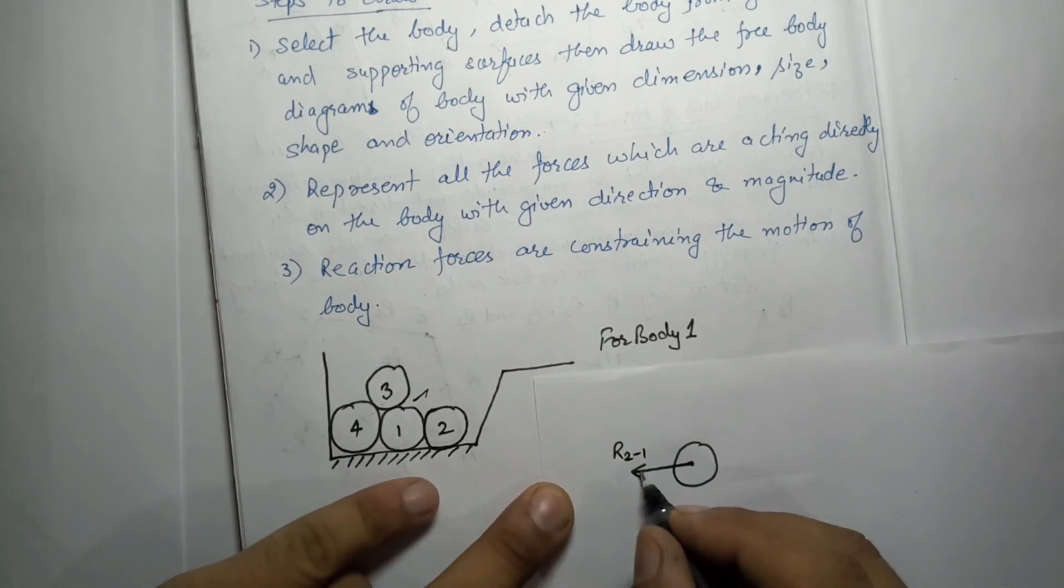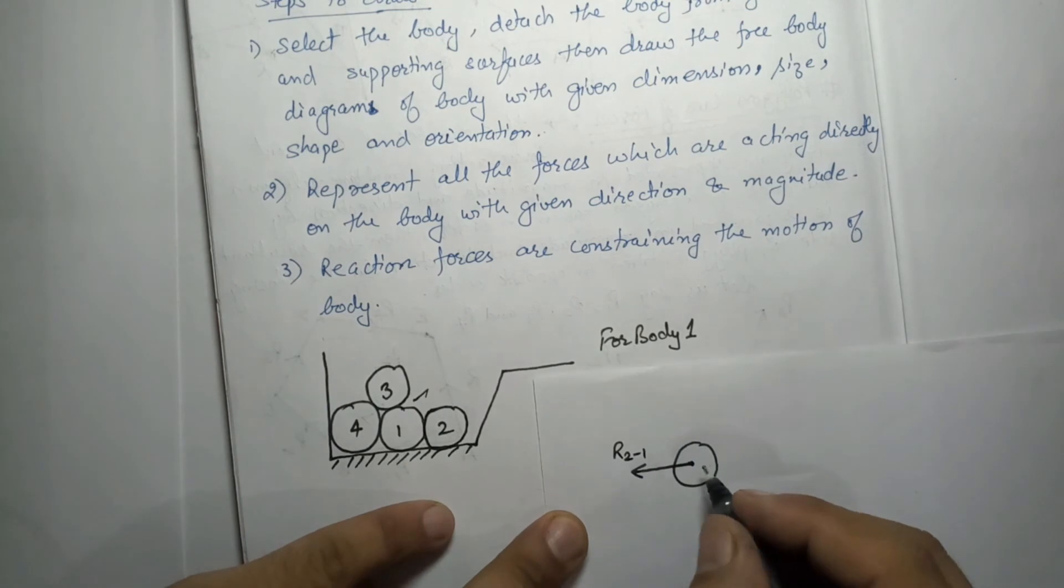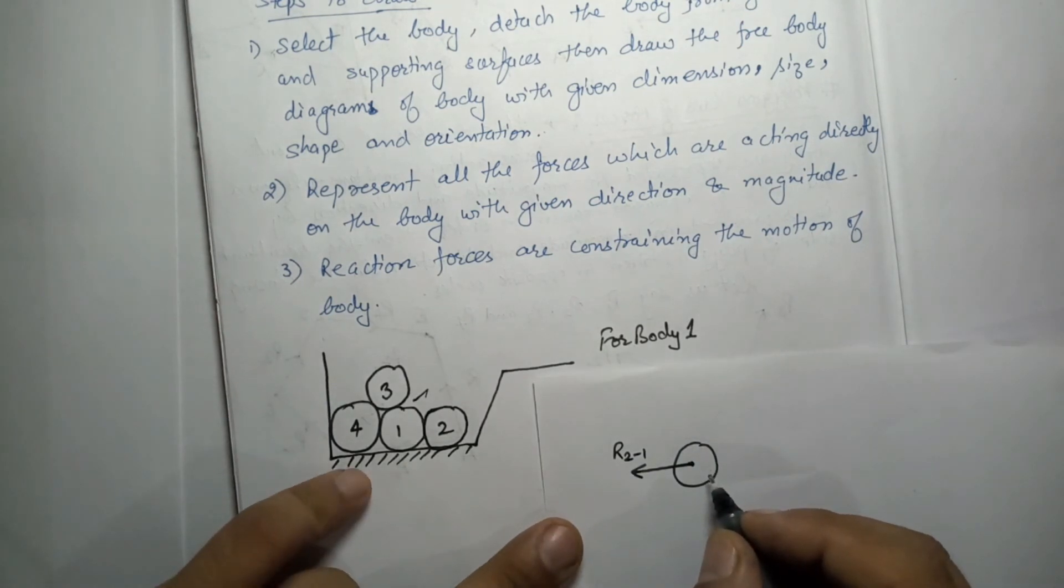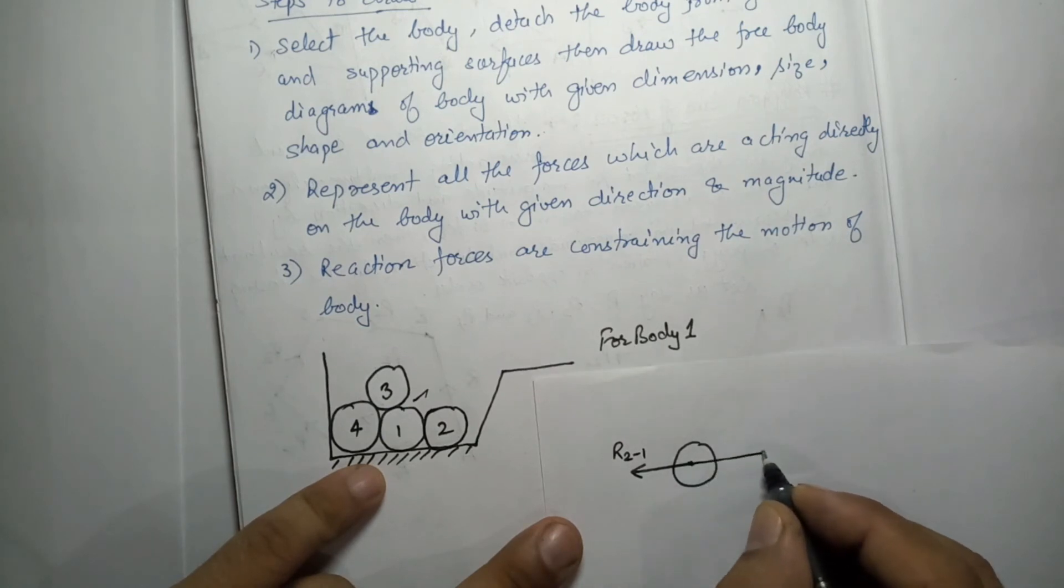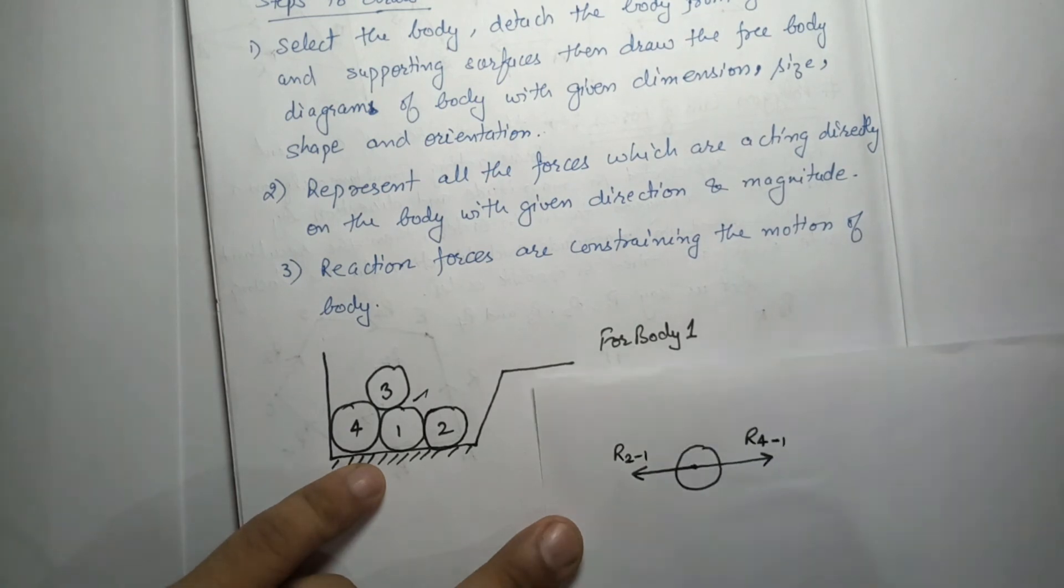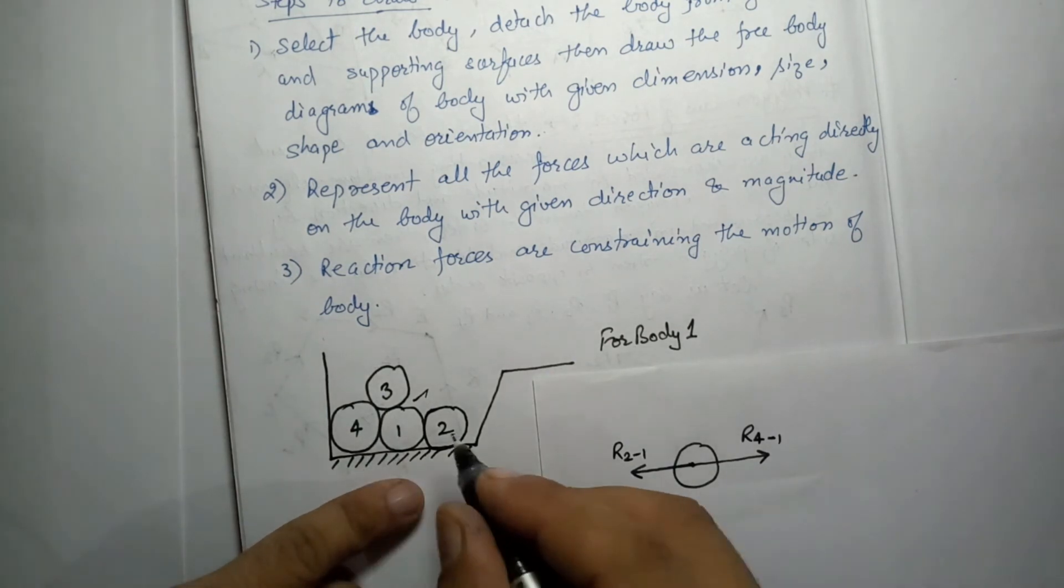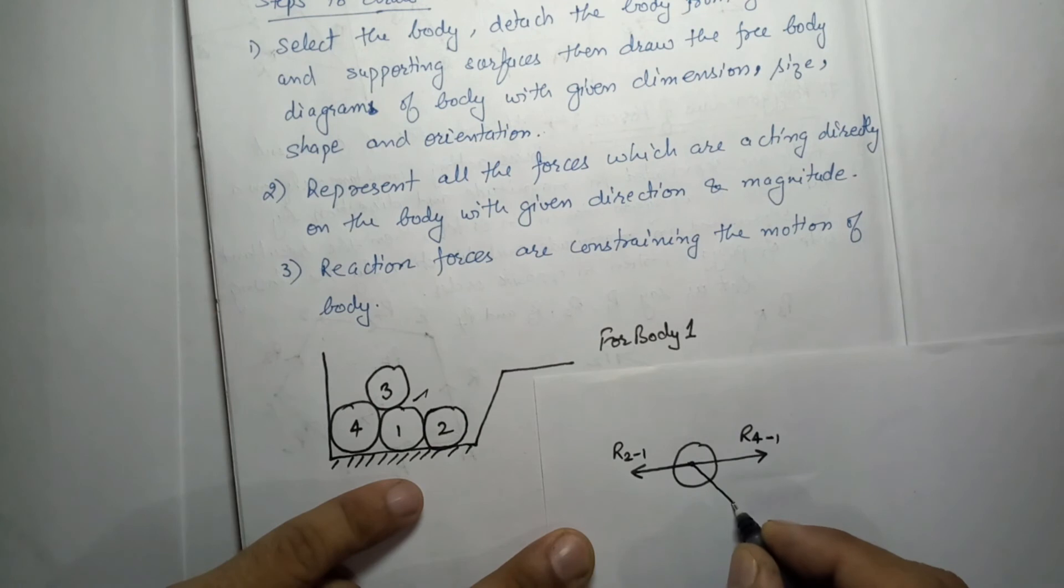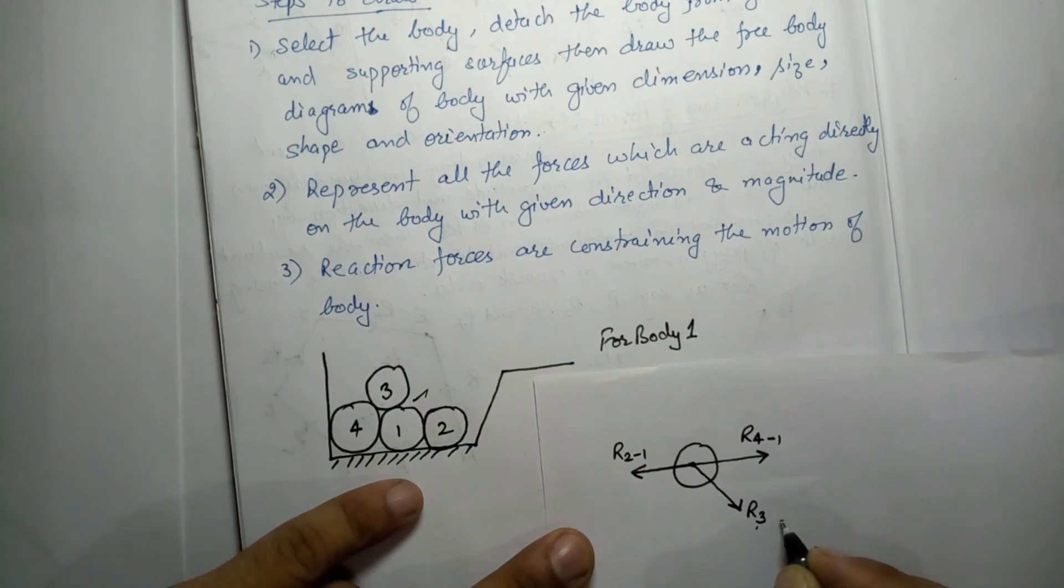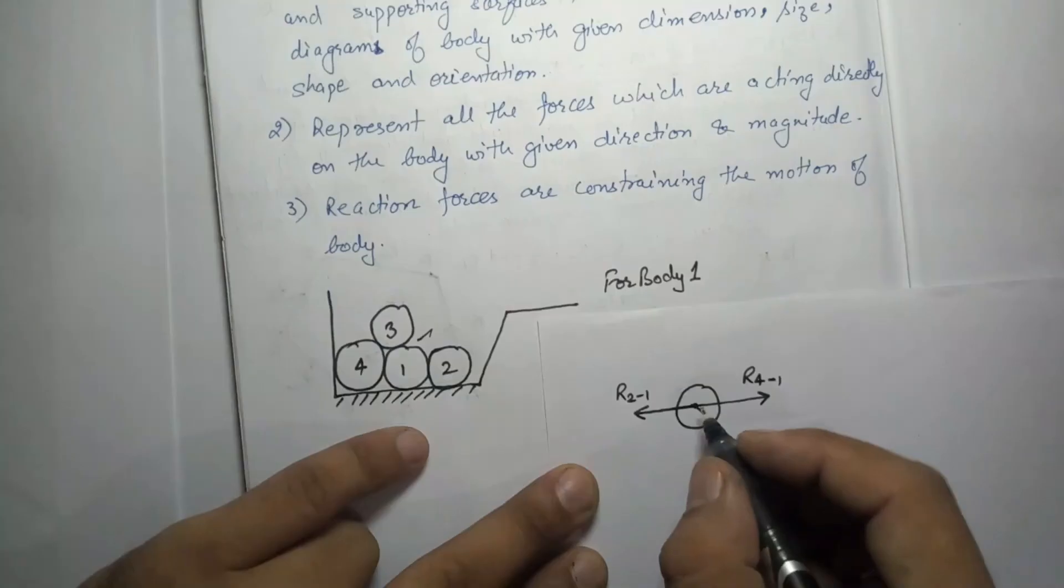Then it will have object 4, so body 4 will also apply a force and this will be the direction. So this is the direction of force 4 on 1. Similarly, another body is there, that is 3. So 3 will also have a force on body 1 and this will be the direction. That is the force due to body 3 on 1.